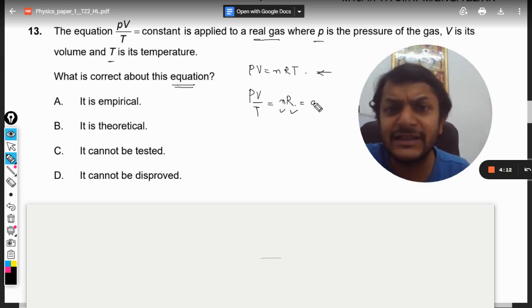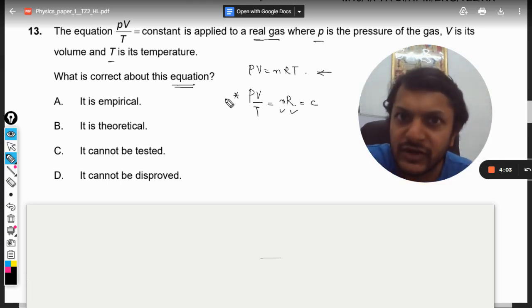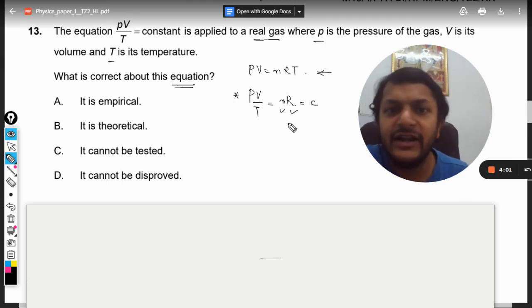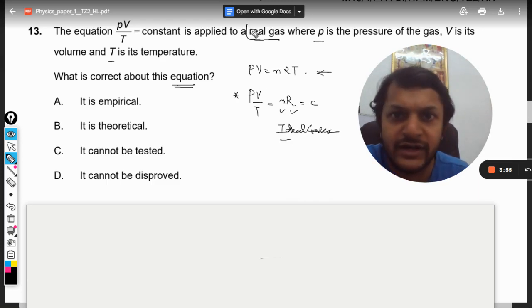And this equation will be always valid, whatever be the process, whatever is happening to the system. But PV by T will always come out to be equal to constant. Now this is valid only and only for ideal gases. It's not valid for real gases.